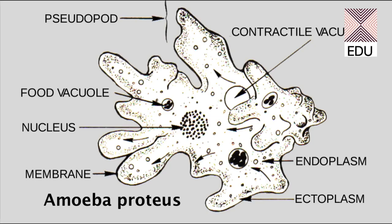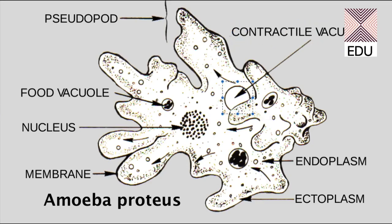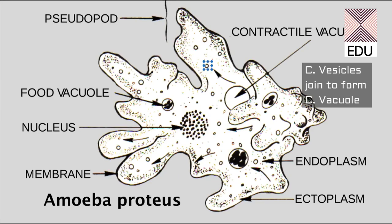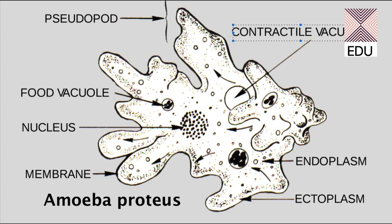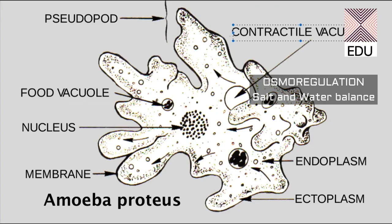After food vacuoles, there are other round structures: a big round structure which is a contractile vacuole, and smaller structures which are contractile vesicles. The small contractile vesicles join together to form a big contractile vacuole. The function of these vacuoles is to take out extra water from the body of the amoeba and throw it out, protecting the amoeba from bulging up. This is a protection mechanism and helps in osmoregulation.